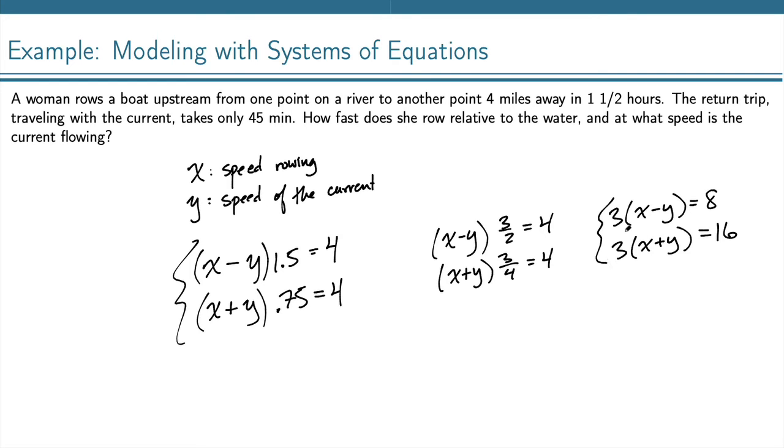If I distribute the threes through, I get 3x minus 3y and 3x plus 3y, and of course I've got my 8 and my 16.